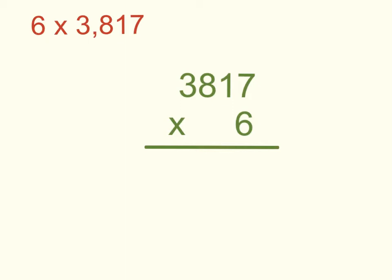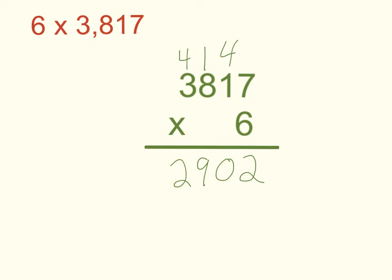Now let's multiply 6 times 3,817. We start in our ones place and multiply 6 times 7, which gives me 42 — put your 4 in your tens place and your 2 in your ones place. Next, 6 times 1 gives me 6, plus 4 is 10 — put your 1 in your hundreds place and your 0 in your tens place. Then 6 times 8 is 48, plus 1 gives me 49 — put your 4 in your thousands place and your 9 in your hundreds place. Finally, 6 times 3 is 18, plus 4 gives me 22 — put your 2 in your thousands place and your other 2 in your ten thousands place. Our final product is 22,902.